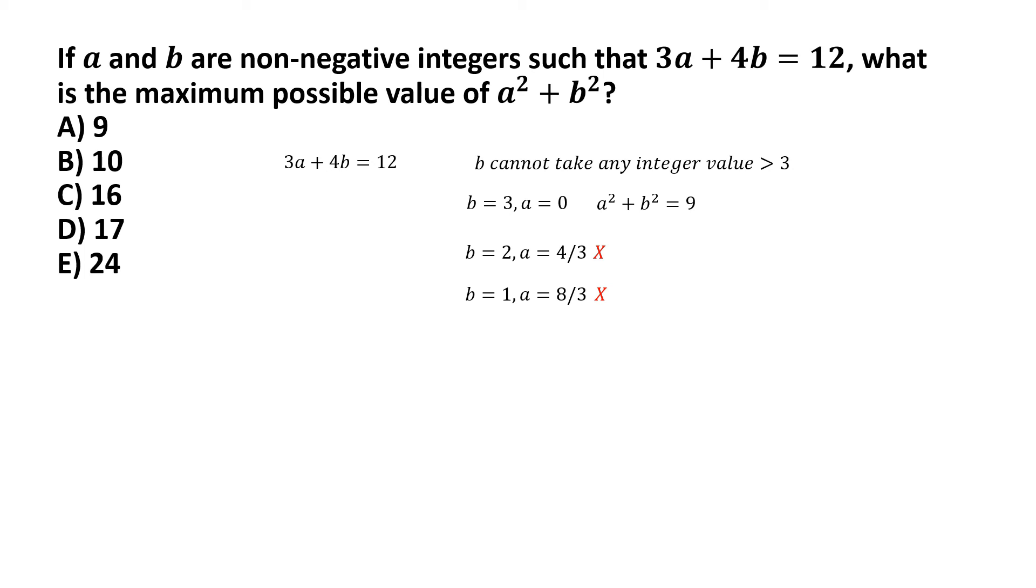And finally, we have one more value that we can test for b, and that's b equal to 0. And if we plug b equal to 0, we get a equal to 4. And for this, a square plus b square equal to 16.